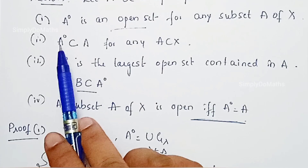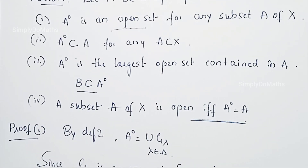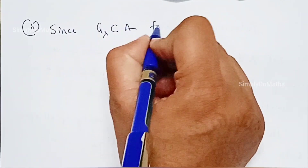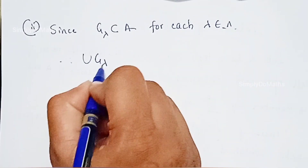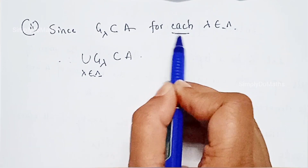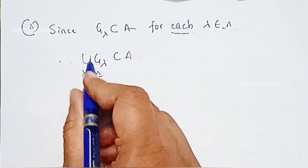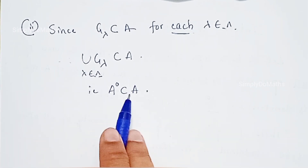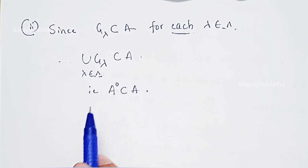The next property: Aº is always a subset of A. By definition, G_λ is always a subset of A for each λ in the index set. Therefore the union of G_λ over the index set is always a subset of A itself, since this holds for each λ it also holds for the union. Thus Aº, being that union, is a subset of A. Also since Aº is an open set and Aº equals A here, A will also be open.